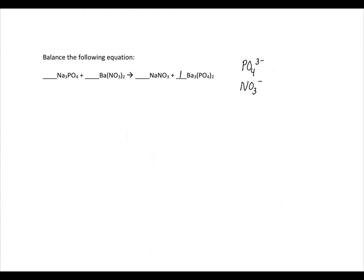We start with barium. We have three atoms of barium in our products, so we multiply barium nitrate by three to have three atoms of barium in our reactants. We have two atoms of phosphate in our products, so we multiply sodium phosphate by two to have two molecules of phosphate in the reactants. Now we have six atoms of sodium in the reactants and six atoms of nitrate in the reactants, so we multiply sodium nitrate by six to have a balanced chemical equation.